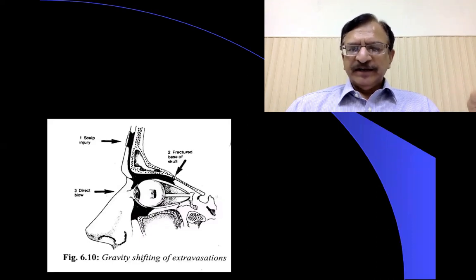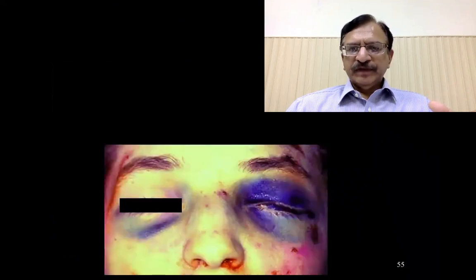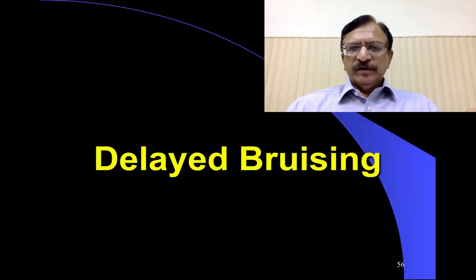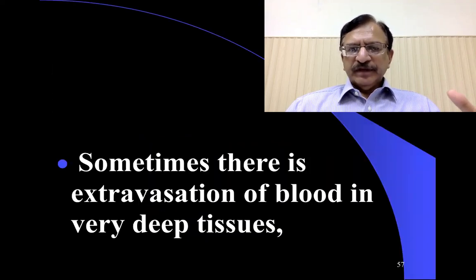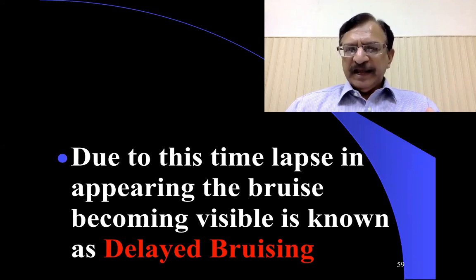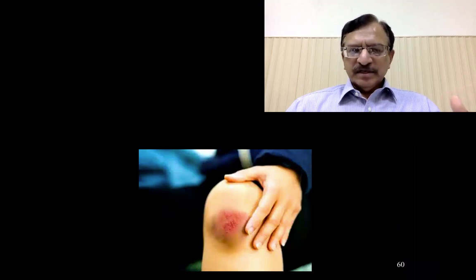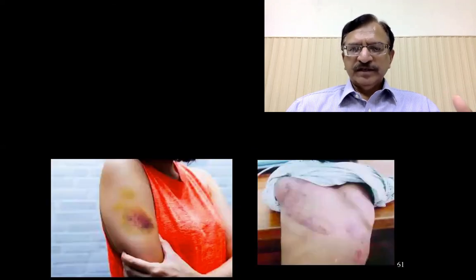This is the diagrammatic representation, and this is the actual picture — you can see the black eye. Regarding delayed bruising: sometimes there is extravasation of blood in very deep tissues, and it will take some time to become visible at the superficial surface. Due to this time lapse, the bruise becomes visible later — it is known as delayed bruising. This is a delayed bruising which was present at the deeper tissues and became visible after two days.